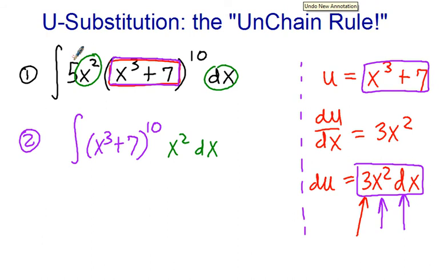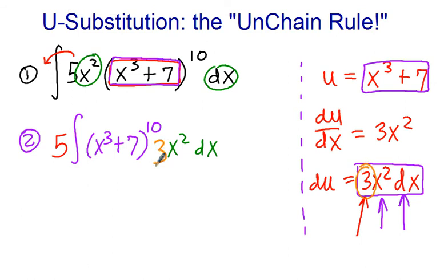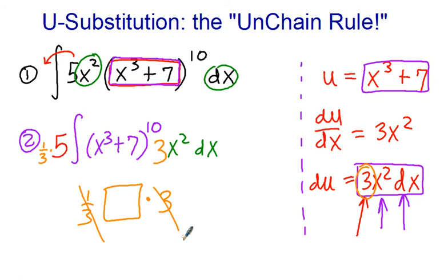First thing, we'll pull 5 out in front of the integral — that's the constant multiple rule for integrals. And second thing, let's write in the thing we want to see, which is 3x squared dx, and then deal with that action accordingly. How to deal with it is to multiply the integral by a third. We did 3 times the quantity, and then a third of that quantity, which really is just the quantity itself. With that, I believe we're all set to do the u-substitution.